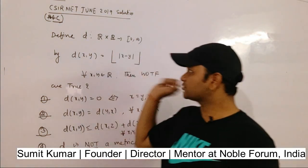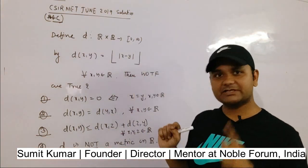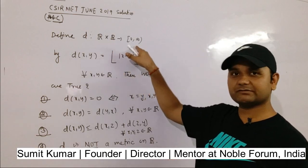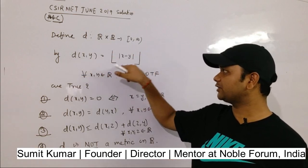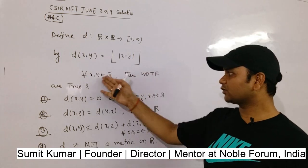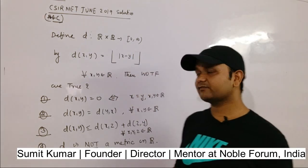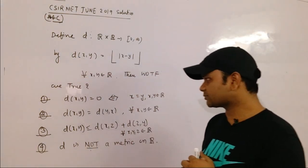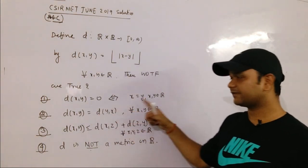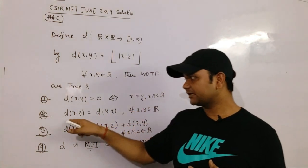The question is: you are going to define a function d from R cross R to [0, infinity) via d(x,y) equal to the greatest integer of |x-y| for all x,y belongs to R. Then you are asking which of the following are true: first option d(x,y) = 0 if and only if x = y, for all x,y d(x,y) = d(y,x),